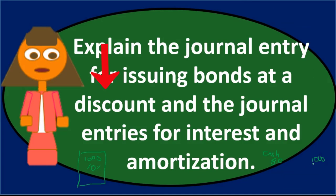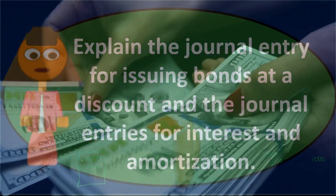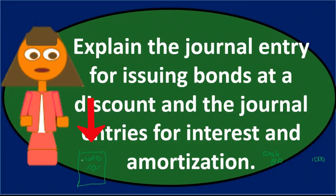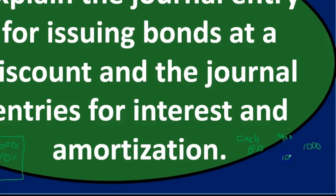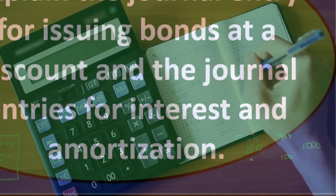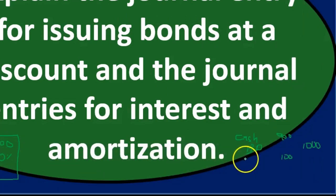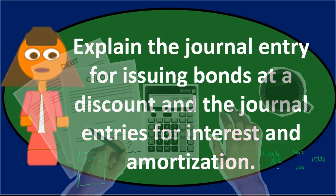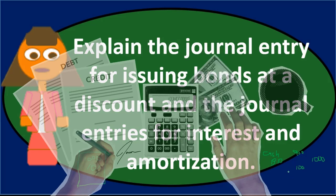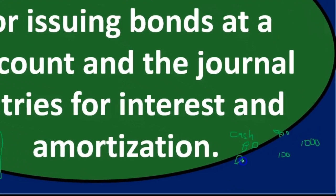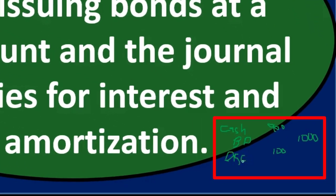Now we need to determine the discount. What does it mean to issue at a discount? If the face amount is one thousand and we receive something less than that — say nine hundred — then we have a discount of one hundred. Starting to write out the journal entry, we can see that the discount will have to be a debit. It's useful to write out the journal entry even without numbers, even sloppily, because it tells you whether something is a debit or credit and helps you think through it.